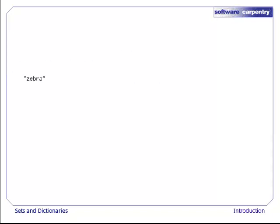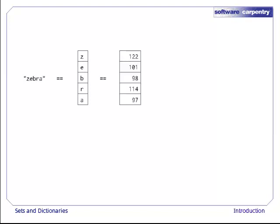Let's start with the string zebra. It consists of the 5 characters z, e, b, r, and a. Each character is stored in memory as a small integer, 97 for lower case a, 98 for lower case b, and so on up to 122 for lower case z.